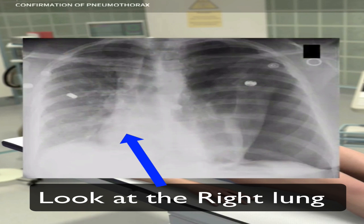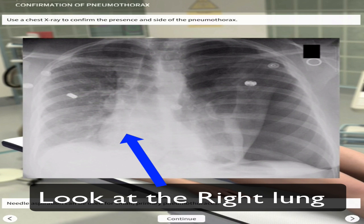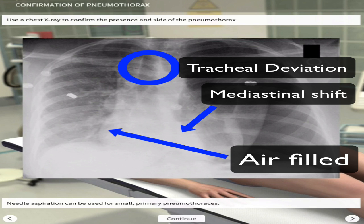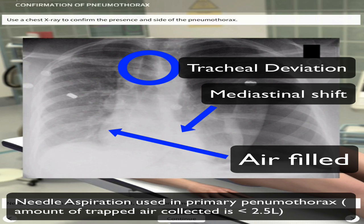On the screen now you have a chest X-ray. Looking at the right lung compared to the left, you can see tracheal deviation, a mediastinal shift with the heart pushed to the right, and air filling causing the whole lung to appear smaller compared to the opposite side — this confirms a pneumothorax.